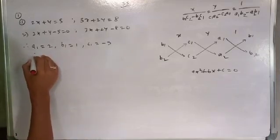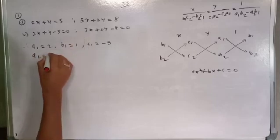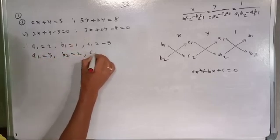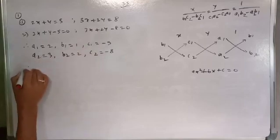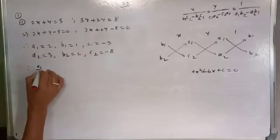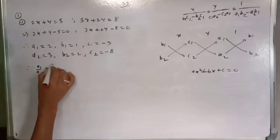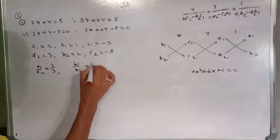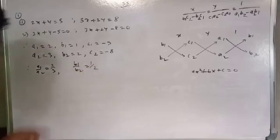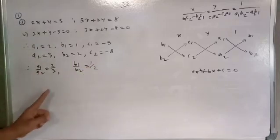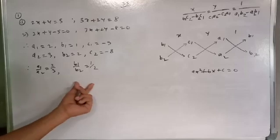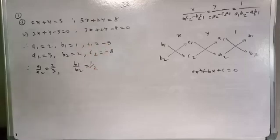So a2 = 3, b2 = 2. Therefore, a1 by a2 is equal to 2 by 3, and b1 by b2 is equal to 1 by 2. Since a1 by a2 is not equal to b1 by b2, c1 by c2 equals a different value as well.